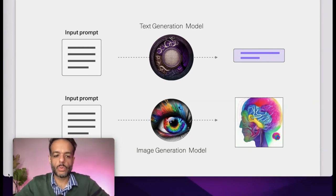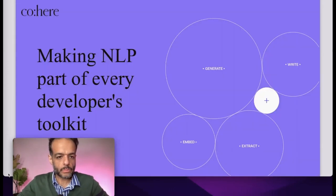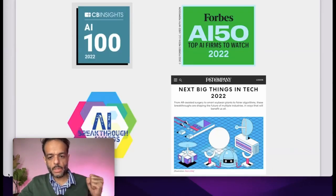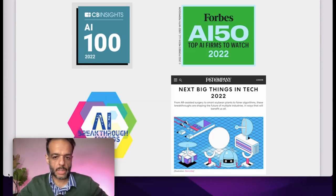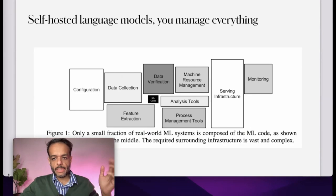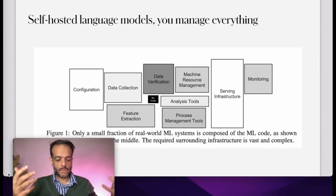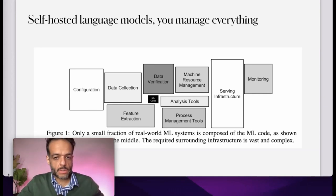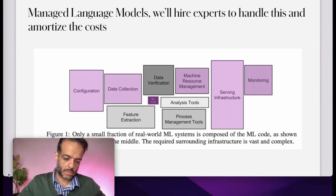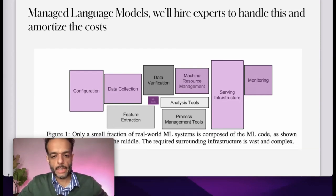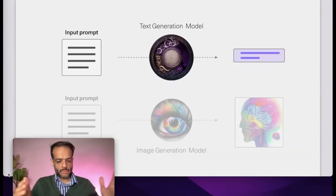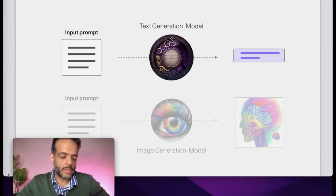I work at Cohere, which is working to make NLP part of every developer's toolkit. We've been featured in a number of these lists. The main idea is that Cohere trains large language models and offers them on the cloud via API. If you use a managed language model provider, you get all of these benefits compared to trying to deploy your own model and figuring out serving and monitoring yourself.